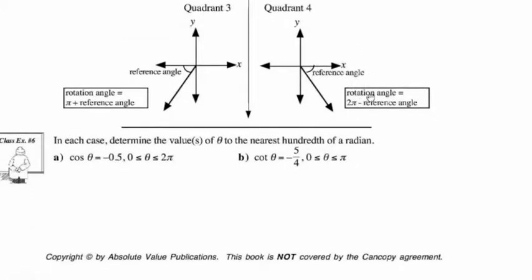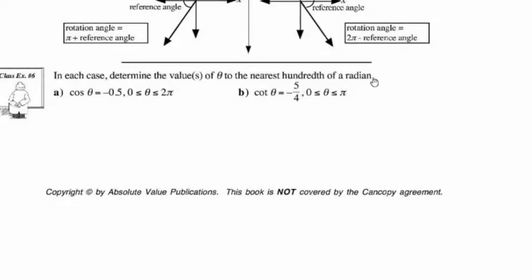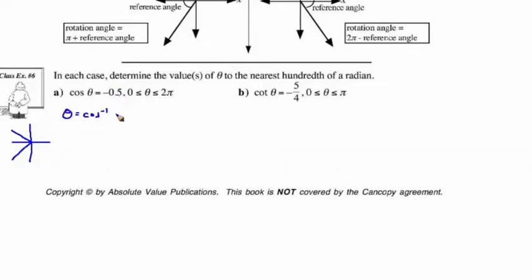Let's take a look at class example 6, and see if we can determine the values of theta to the nearest hundredth of a radian. Drawing a sketch first, for the cosine ratio to be negative, we're talking about quadrant 2 and quadrant 3, where the x value is negative. So let's figure out what the reference angle is going to be. Theta is going to be equal to the cos inverse of that value, but to find the reference angle we're going to disregard the negative and just use 0.5.